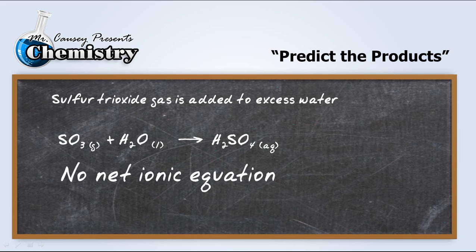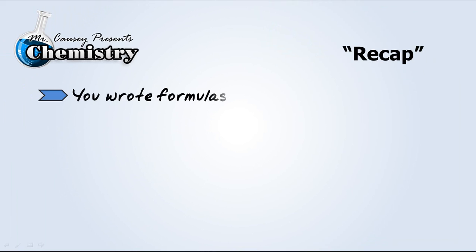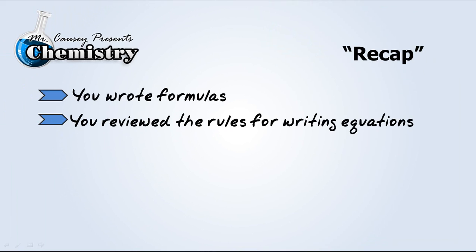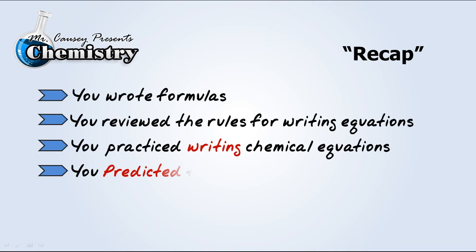Alright, we also know there's no net ionic equation. This is all covalent. And so let's recap. You wrote formulas, you reviewed the rules for writing equations, you practiced writing chemical equations, and you predicted the products.